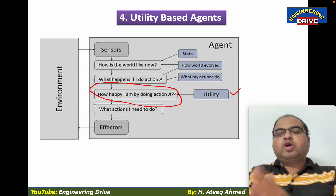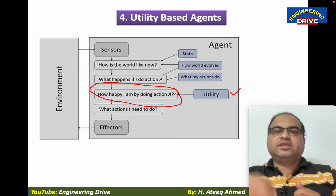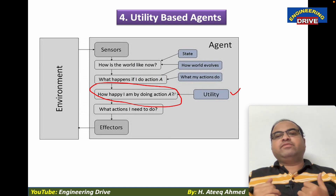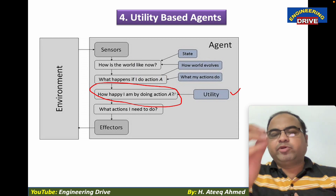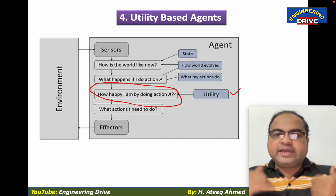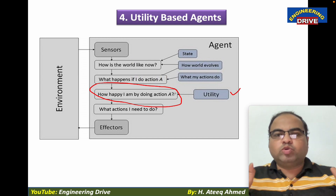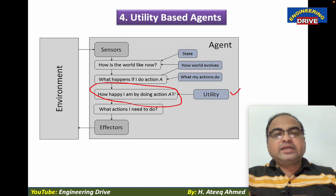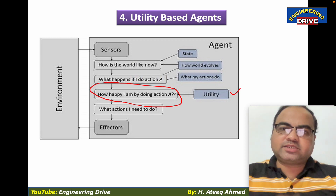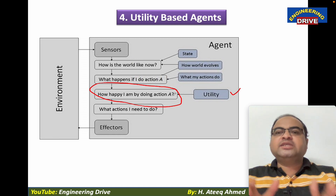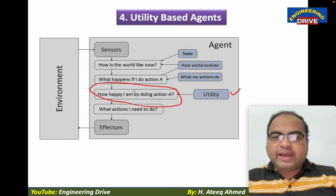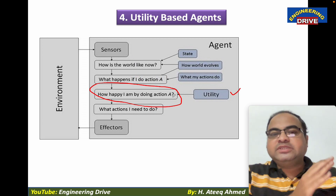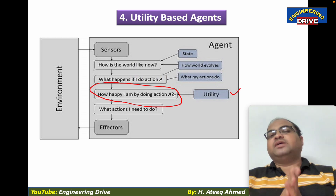In the second example, parents tell the student he can select a branch according to his interest. The student says his preference is CSE — he wants to join computer science and engineering. The student has joined CSE and has not set any specific goal, but because he selected the branch he has full interest in study, and ultimately the student may get success and may get a good job. This is a utility-based agent — selecting the branch based on how happy the action makes you.